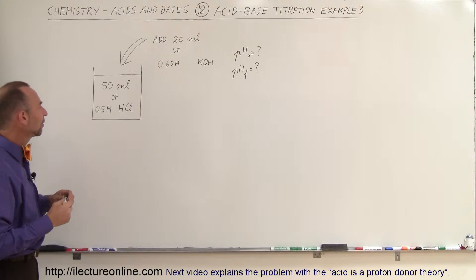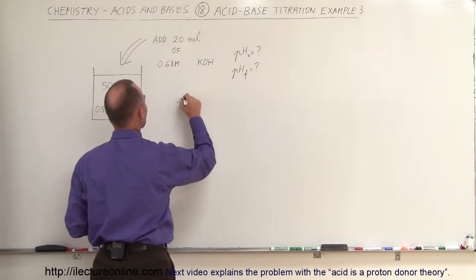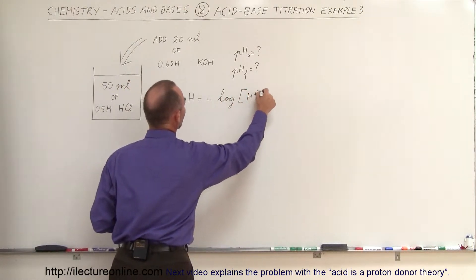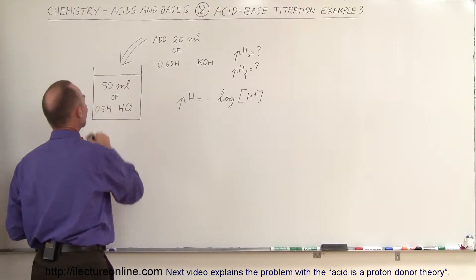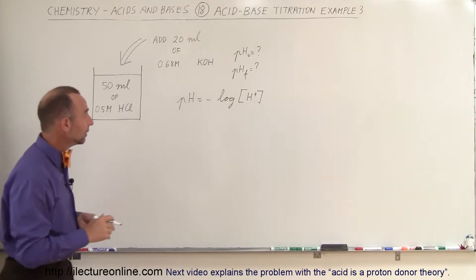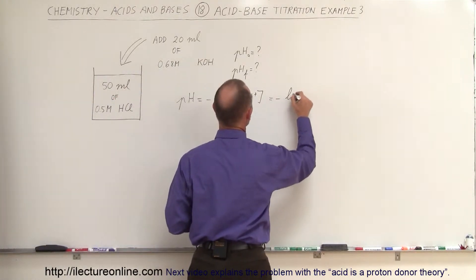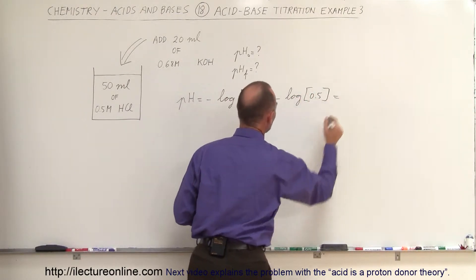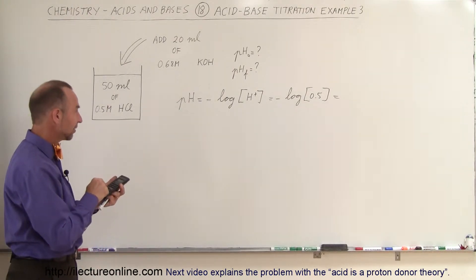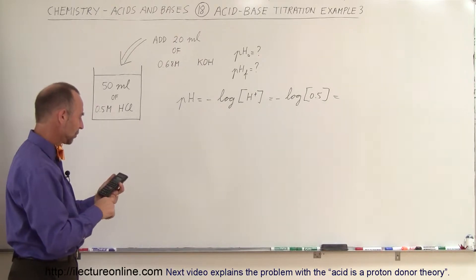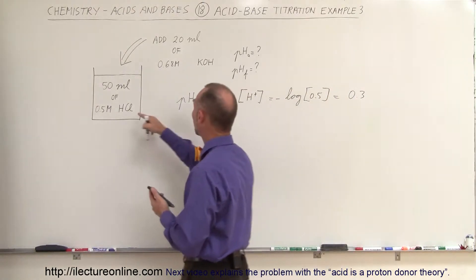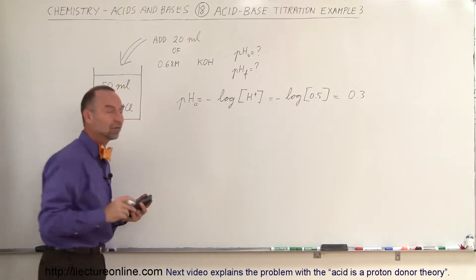First, let's figure out the initial pH. The equation for pH is: pH equals the negative of the log of the concentration of the hydrogen ion. Since the HCl concentration is 0.5 molar, we have pH = -log(0.5). Taking the log of 0.5 gives -0.3, so the negative of that is 0.3. The initial pH is 0.3.